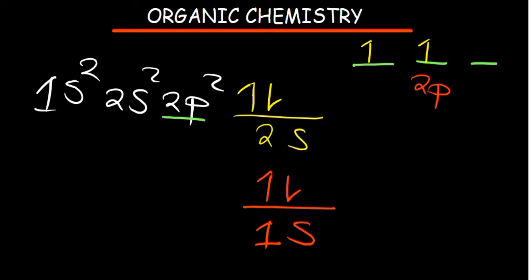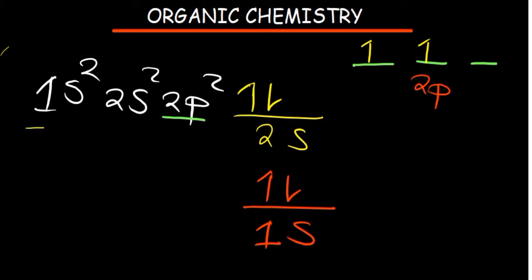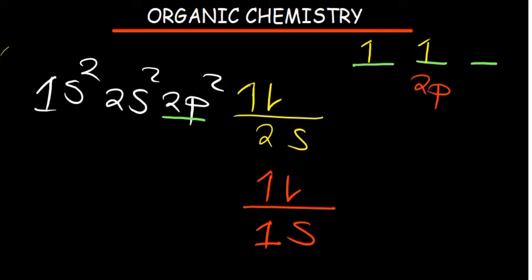Now, some questions they can give you under organic chemistry - you need to write the excited state electron configuration of a carbon. This is the ground state electron configuration of a carbon atom. In the excited state, what basically happens is this electron shifts and goes to that point there. So in the excited state, there will only be a single electron in the 2s orbital. This is what allows carbon to form up to four bonds.